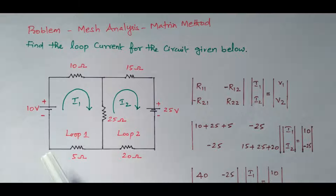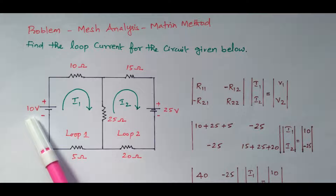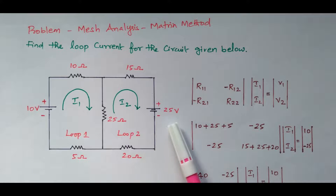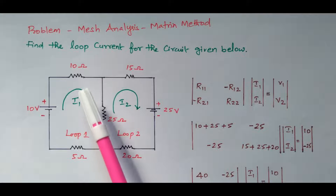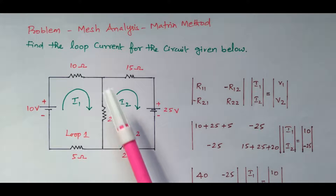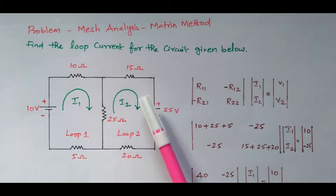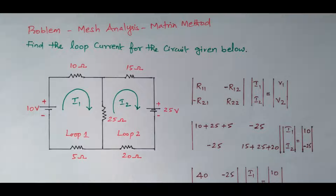In this circuit diagram, a 10V voltage source is available on one side, and a 25V voltage source is available on the other side. There are five resistors available: 10 ohm, 25 ohm, 5 ohm, 15 ohm, and 20 ohm.